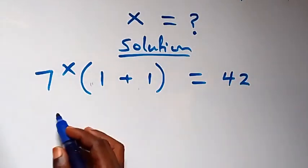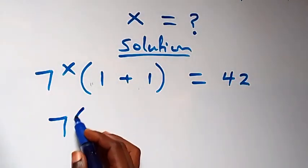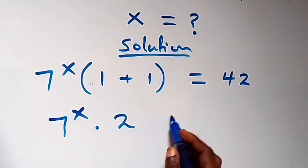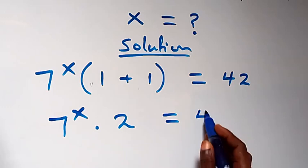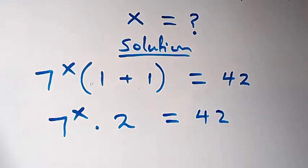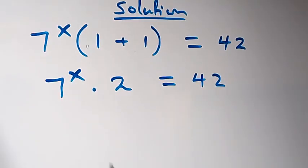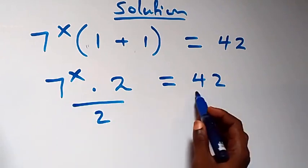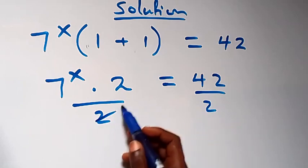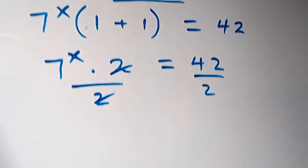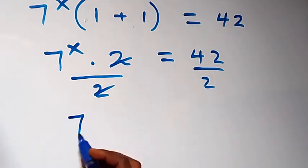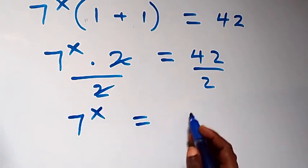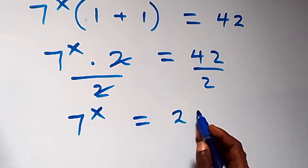Here we have 7 raised to power x times 1 plus 1, that is 2, equals 42. Next step, let's divide both sides by 2 — the 2s cancel each other — and we have 7 raised to power x equals 42 over 2, which equals 21.